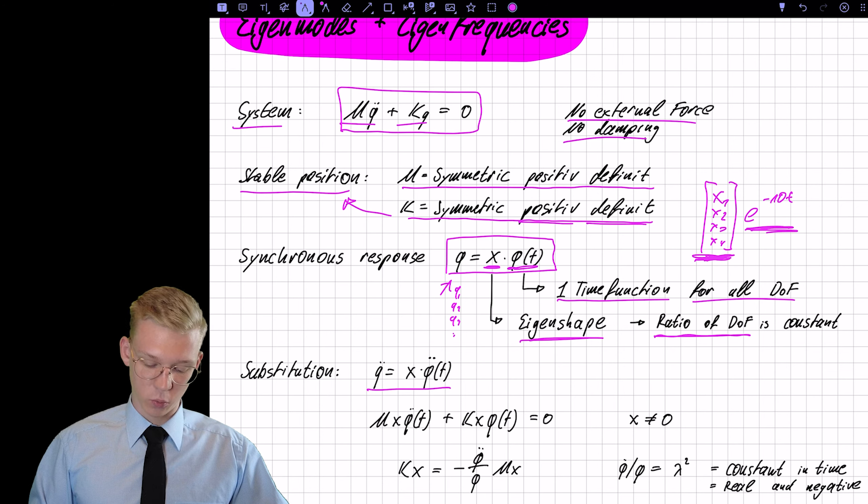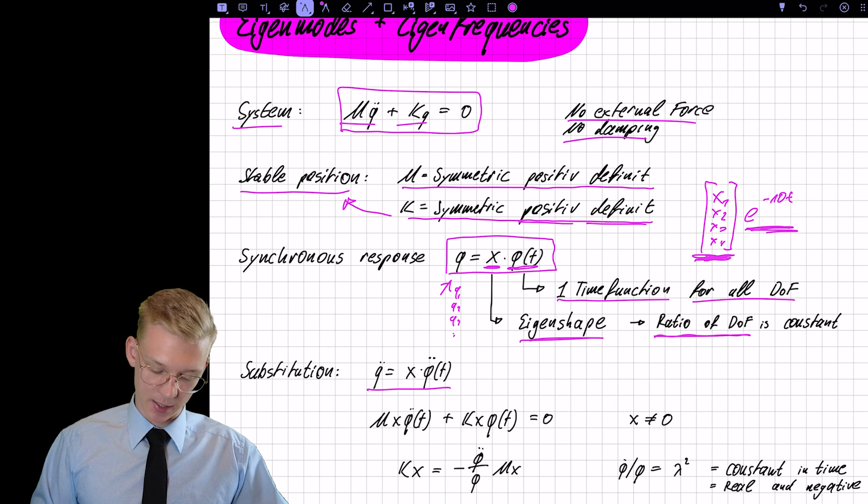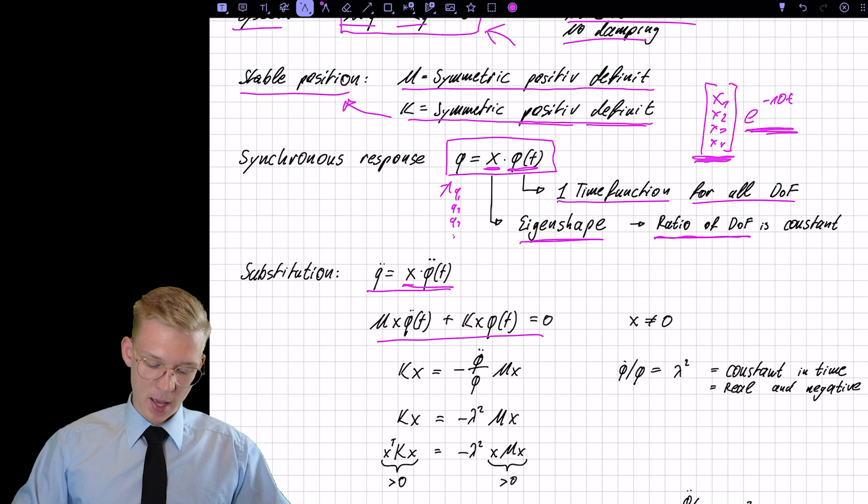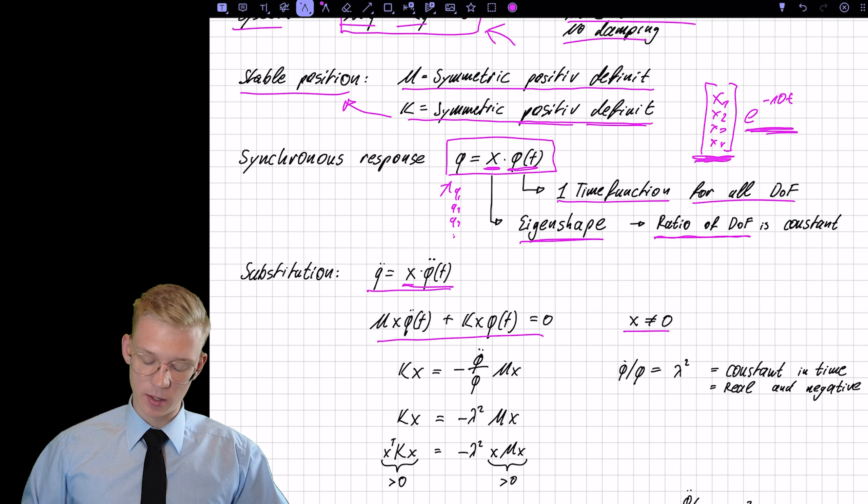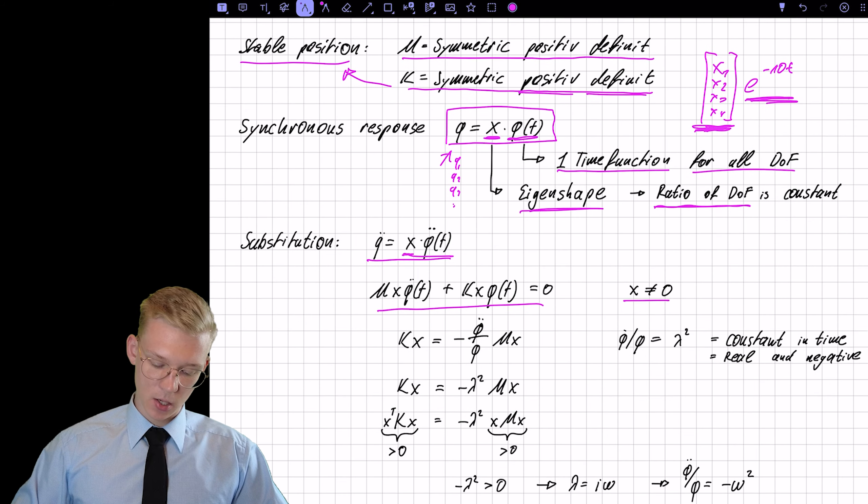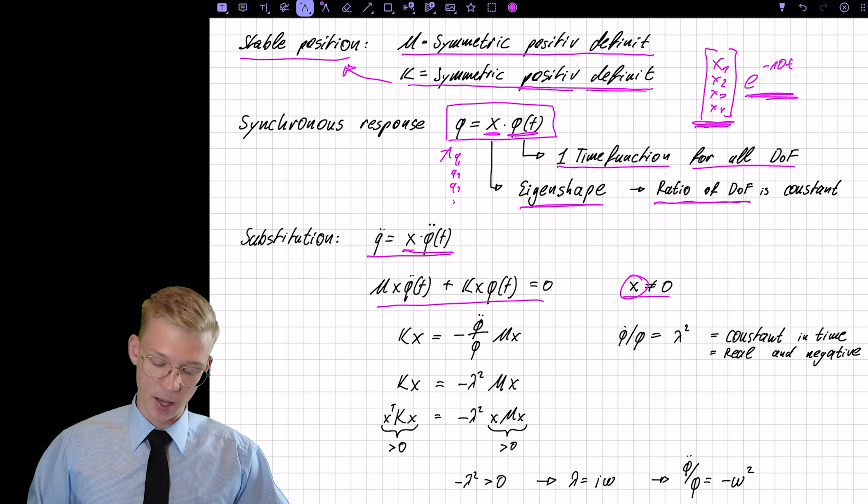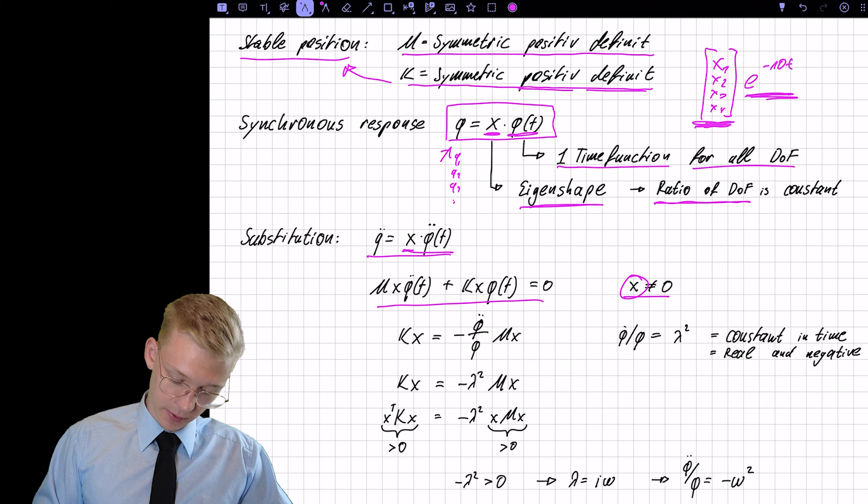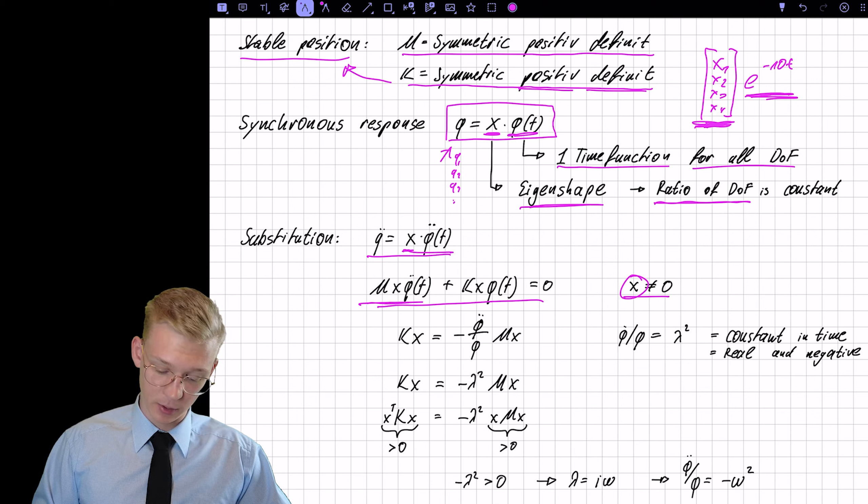And now we have to work with that proposed solution. So if we derive it twice with time, we get X phi double dot because X is not dependent on time and we just insert it right there and we get this equation. Again, we are not interested in the trivial solution. So we do not accept X as 0.